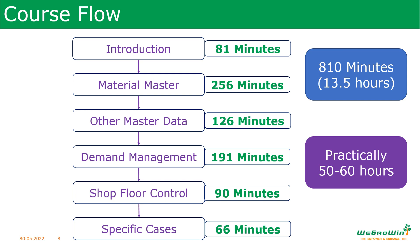Other master data such as bill of material, work center, routing, and production version took 126 minutes. Next is demand management, where we discussed how to enter demand in the system, what material requirement planning is, the logic in MRP, how to run MRP, exception messages, and planned orders — covered in 191 minutes.